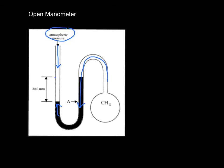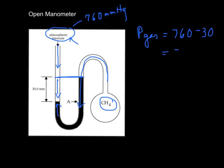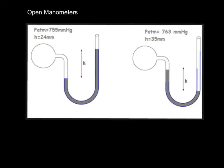If these were exactly even, then the pressure of the gas would equal the atmospheric pressure. But can you see that the atmosphere is winning by 30 millimeters? So let's say the atmospheric pressure is 760 millimeters of mercury. Nice sea level. Then the pressure of the gas equals the 760 minus the 30. So it's going to be 730 millimeters of mercury.